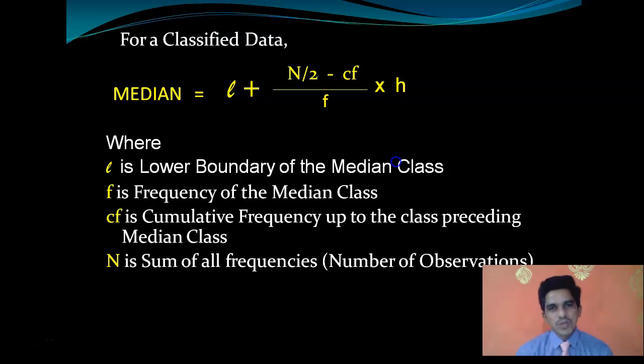CF stands for cumulative frequency, which is the cumulative frequency of the class before the median class. N is the sum of all frequencies, the number of observations. H is the size of the class or height of the class.